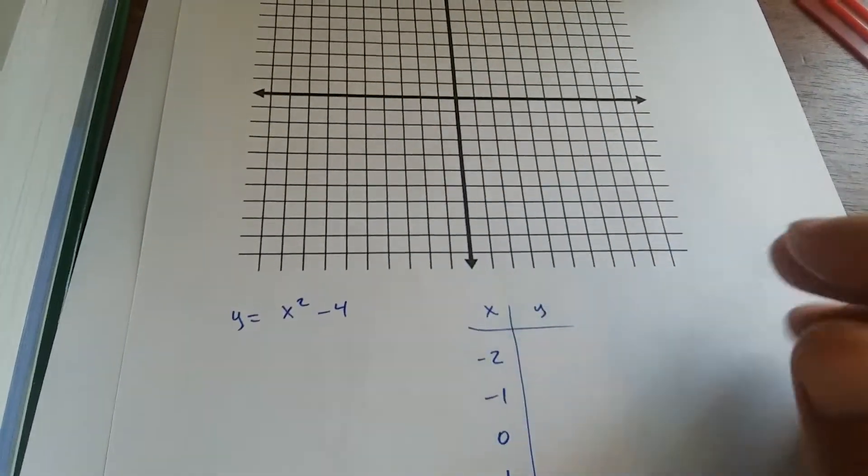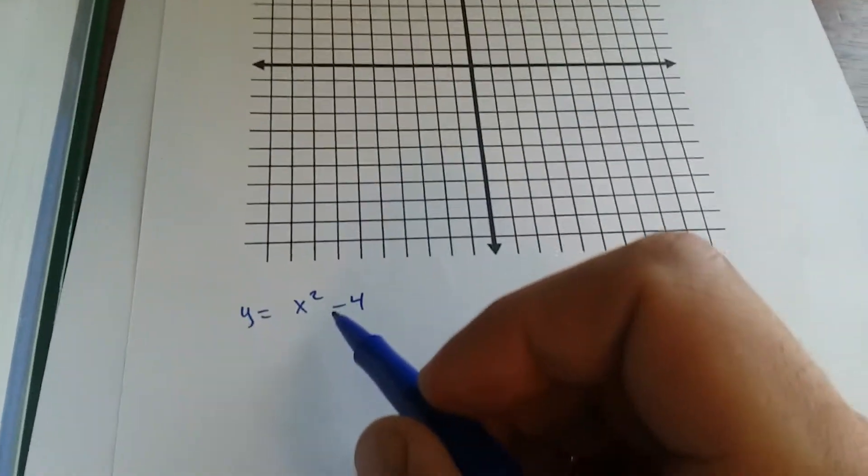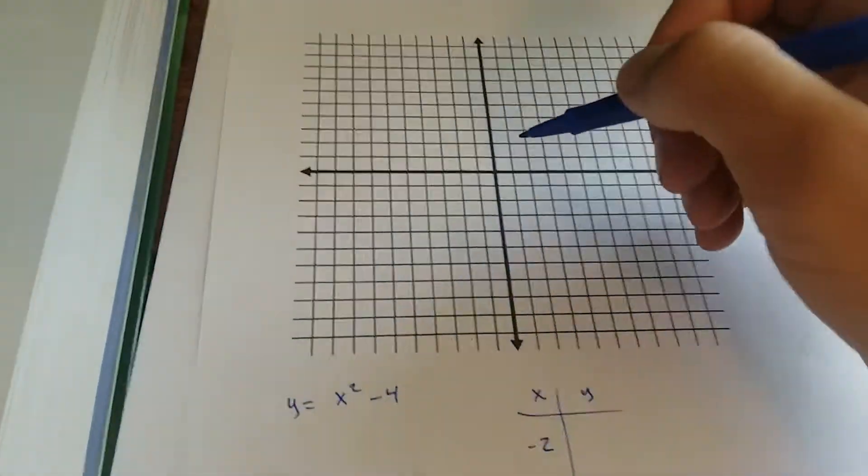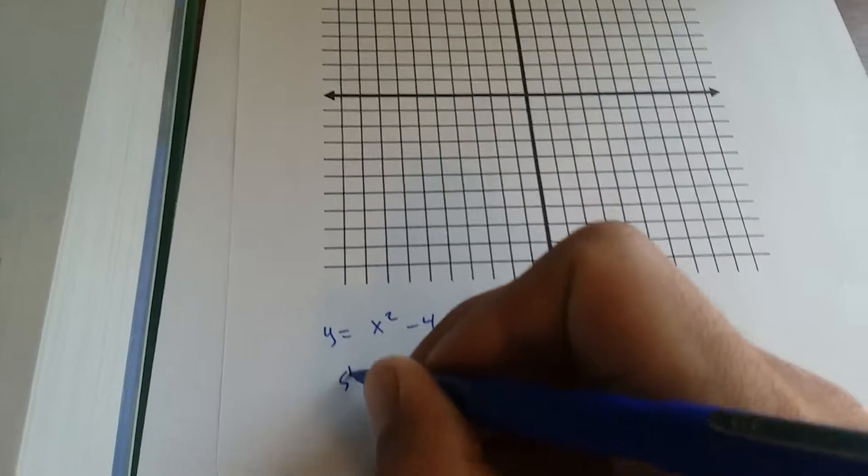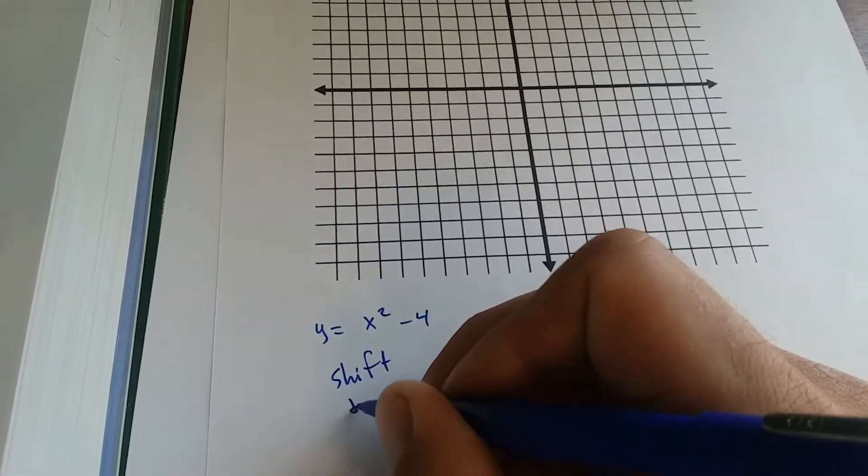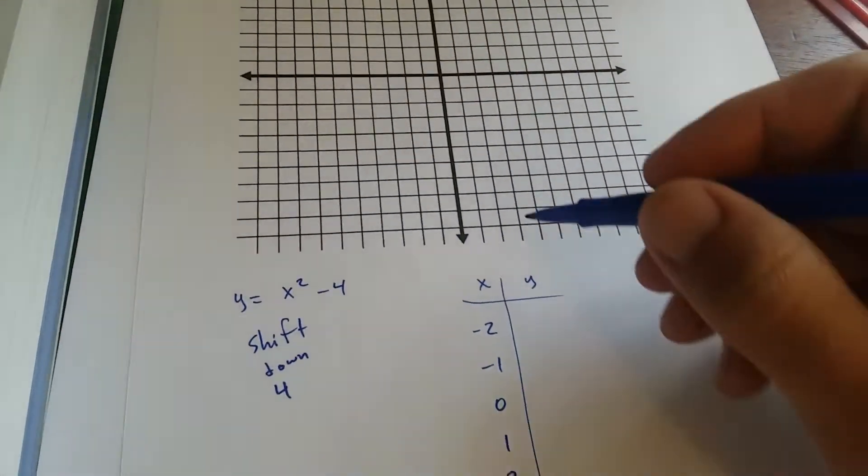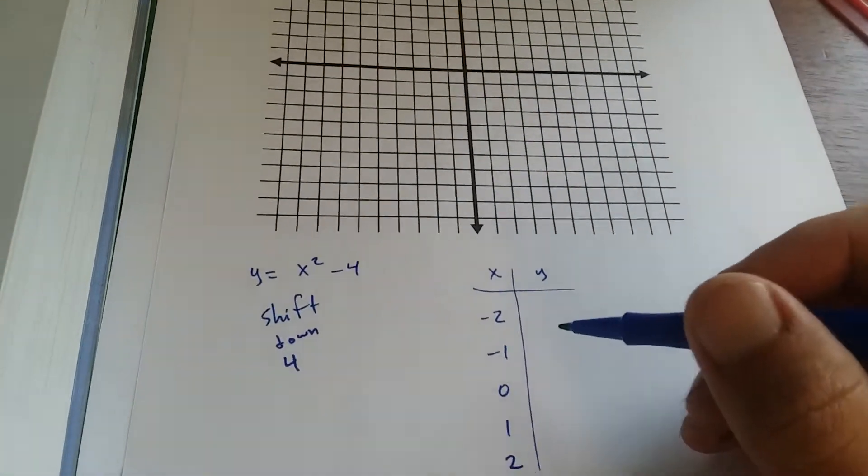Here's our next one. Y equals X squared minus 4. Okay. Notice the minus 4 is not inside parentheses with the X. So that's going to be a shift down 4. Okay. I'm not expecting to get that right away. I'm expecting to actually make the table and graph it and then see.